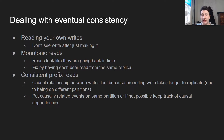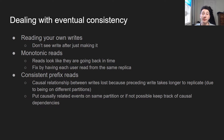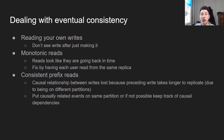There are three main problems with eventual consistency. The first is reading your own writes — say you're on Facebook, you update your profile to say you're 6 feet instead of 5'11". You make the change, then right after you read from a replica that still says you're 5'11", and you're angry because you want to look tall. Then there are monotonic reads, which are when reads look like they're going back in time. Say there are three writes, then you read from one replica with only two of the writes, then another with only one — it looks like things are getting undone. You'd fix that by having each user read from the same replica.